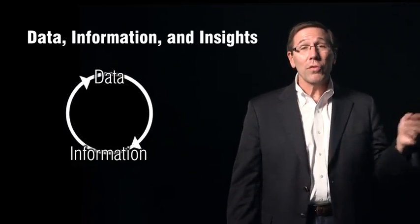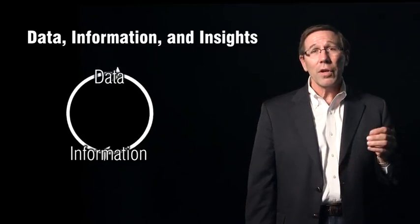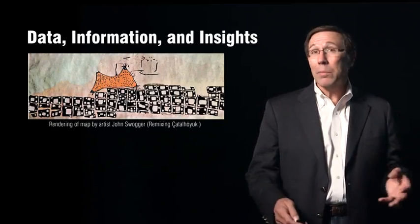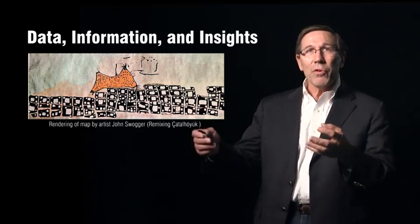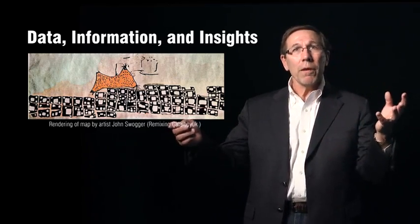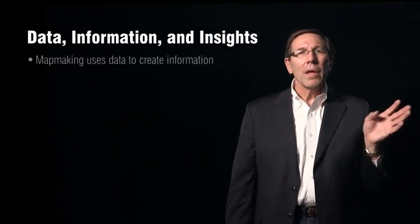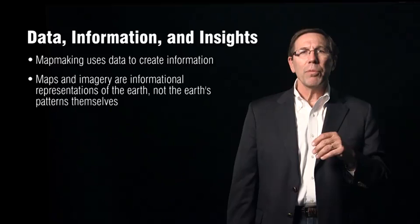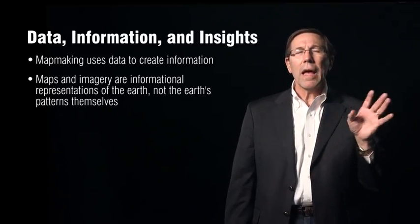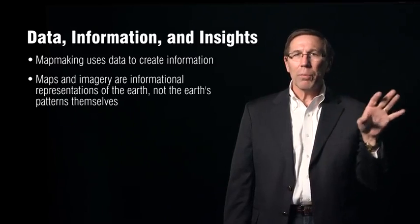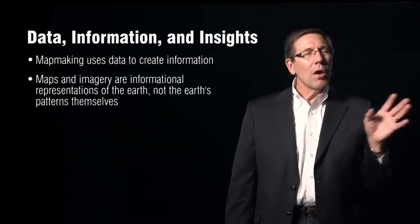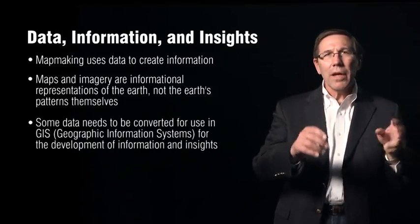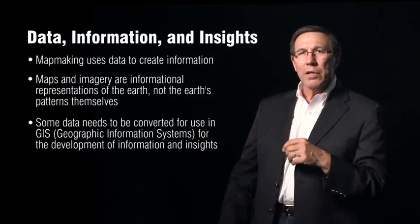Map makers and users have done that for thousands of years. If you think about the first map, it was really data that someone collected by walking around, represented in a form of information on a map. So maps and imagery, like satellite imagery, are really information representations of the Earth's surface, and not the Earth itself. The key is to take that information, convert it to data, and put it in a form that we can use in a GIS — and a lot of times, that's what we do with something called digitizing.